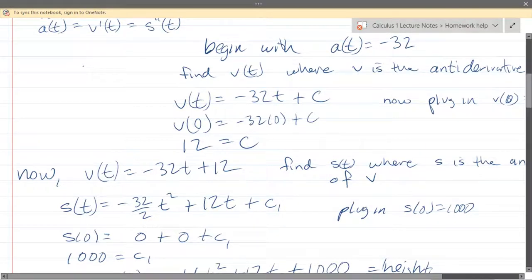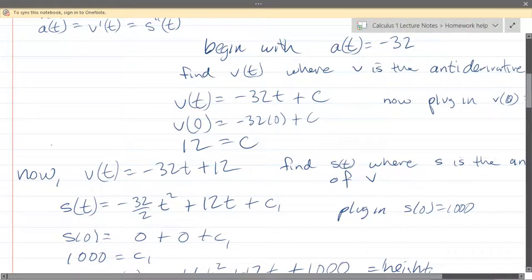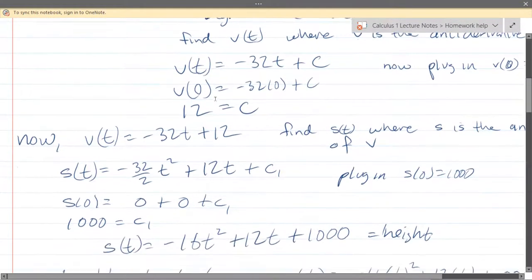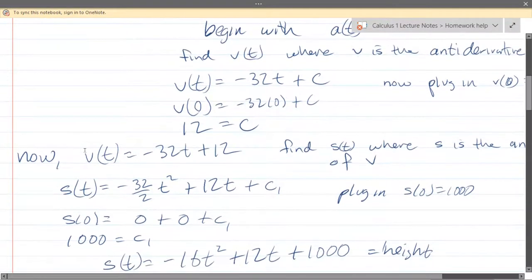We have our anti-derivative, of course 32 divided by 2 is 16. We're going to plug in again, the initial height was 1000 so at zero time our height is 1000. You're going to plug that in here, so put in zero for t and it'll zero out these two terms and you're just left with c1 and c1 equals that initial height of 1000. Now you can plug all of this back into the s of t function and that is your height right there.